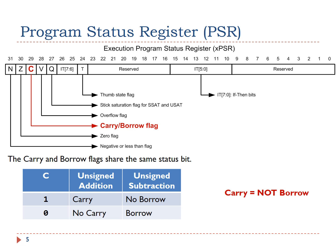If the C flag bit is 1, it means carry for unsigned addition, or no borrow for unsigned subtraction. On the opposite, if C is 0, it means no carry for unsigned addition, or borrow for unsigned subtraction.